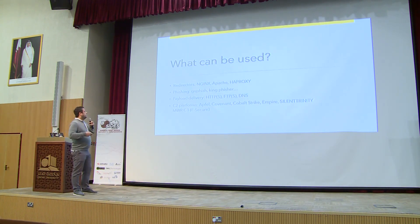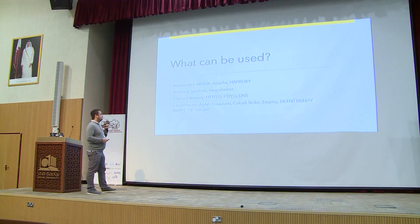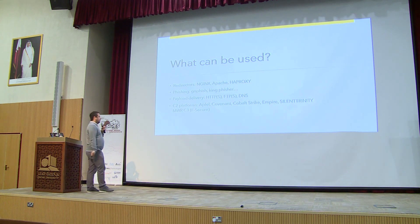We have our phishing server — we need to trick the user into clicking on our payload. We use web servers to deliver this payload, via HTTP or FTP. Most commonly, C2 traffic and data exfiltration traffic is over HTTP or DNS protocol. For redirectors you can use NGINX, Apache, HAProxy. For phishing you have GoFish, Kingfisher, and so on. Payload delivery uses HTTP, FTP, DNS, and various C2 platforms.